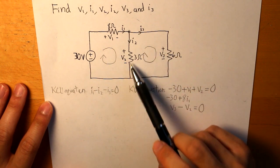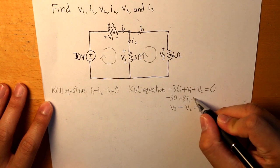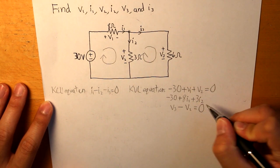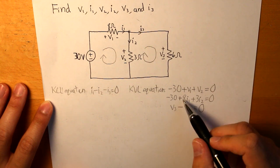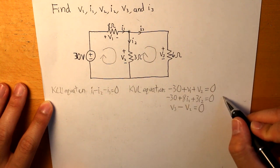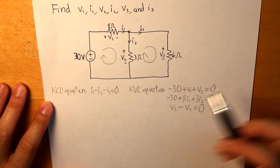And for V2, that is equal to 3I2. And that is our equation, our second equation to find what the current is.